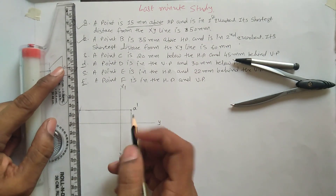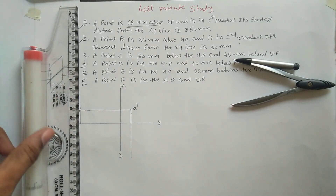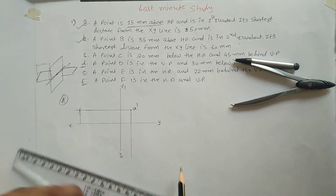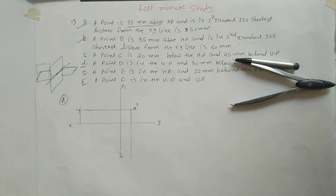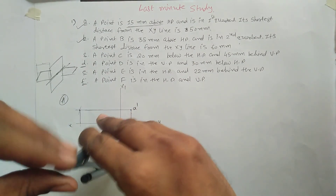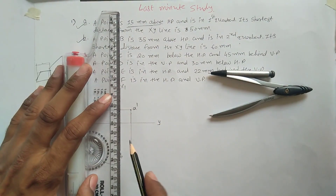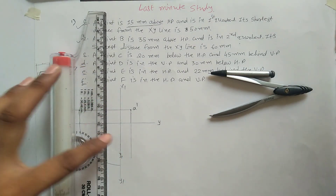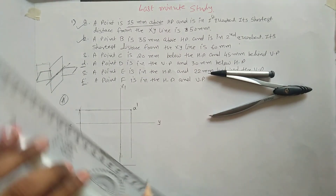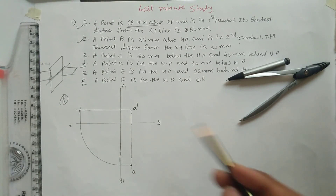Now transfer this distance to the top view. To transfer to the top view, project onto the XY line. For the transfer, you can draw a 45-degree line, or you can use a compass (rounder) to transfer these points onto the XY line. Transfer this point onto the projection line — this point is your A point. This is the final solution for the first problem.